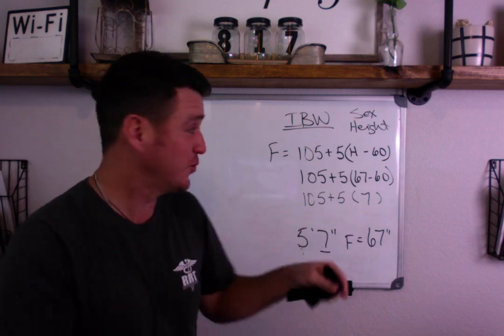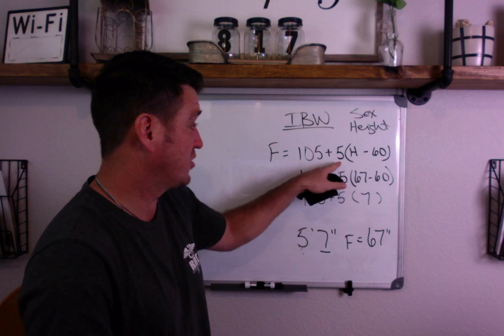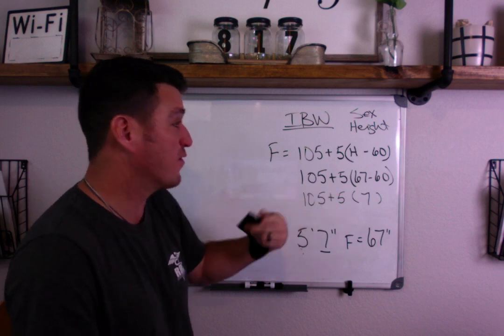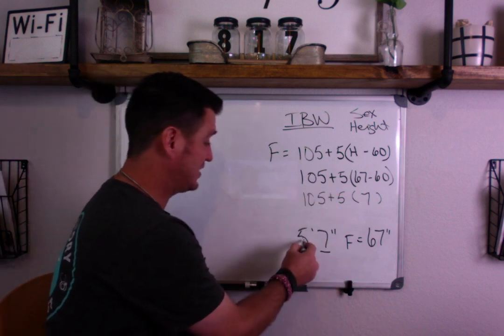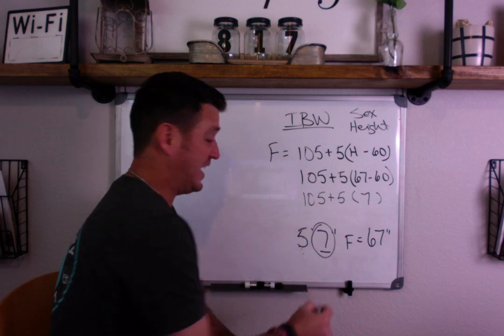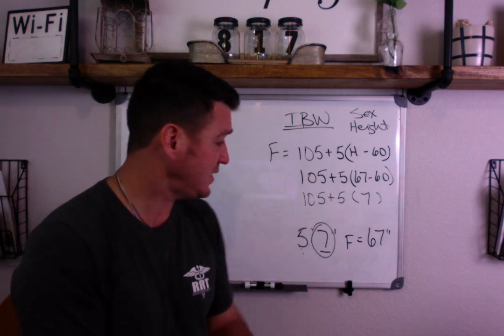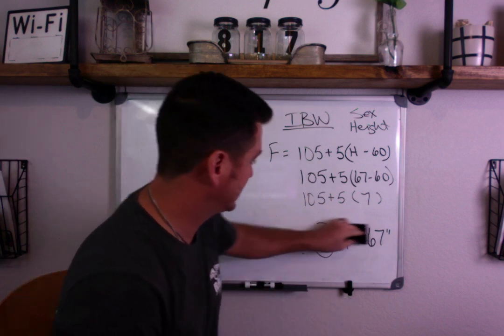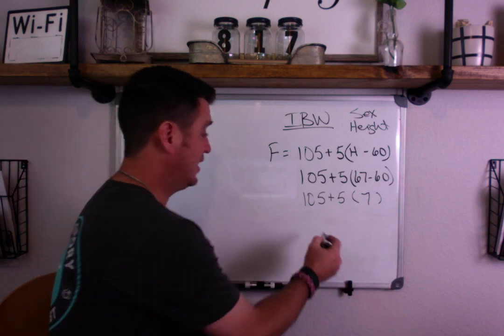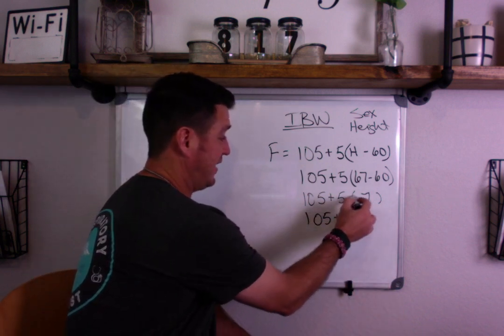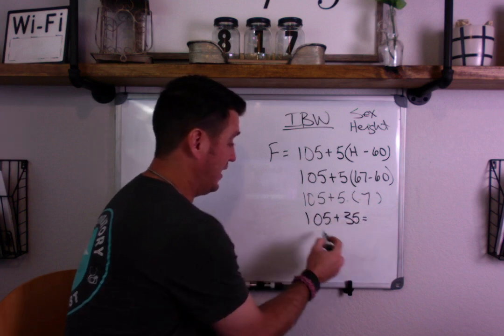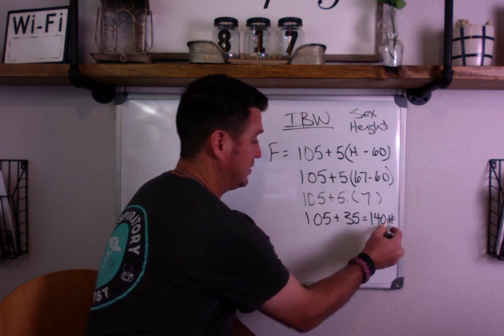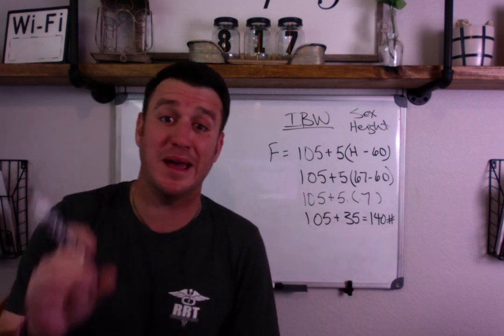Now what I just said, once you realize that this part of the formula is basically multiplying 5 times however many inches over 60, or over five feet, then you realize you can really just say 105 plus 5 times the 7. So that's kind of the only really trick I really do know when it comes to doing this formula. So remember, we're five foot seven. So then we just do the formula. 105 plus 5 times 7 is 35. 105 plus 35 is 140. Now remember, this is in pounds. That's pounds.